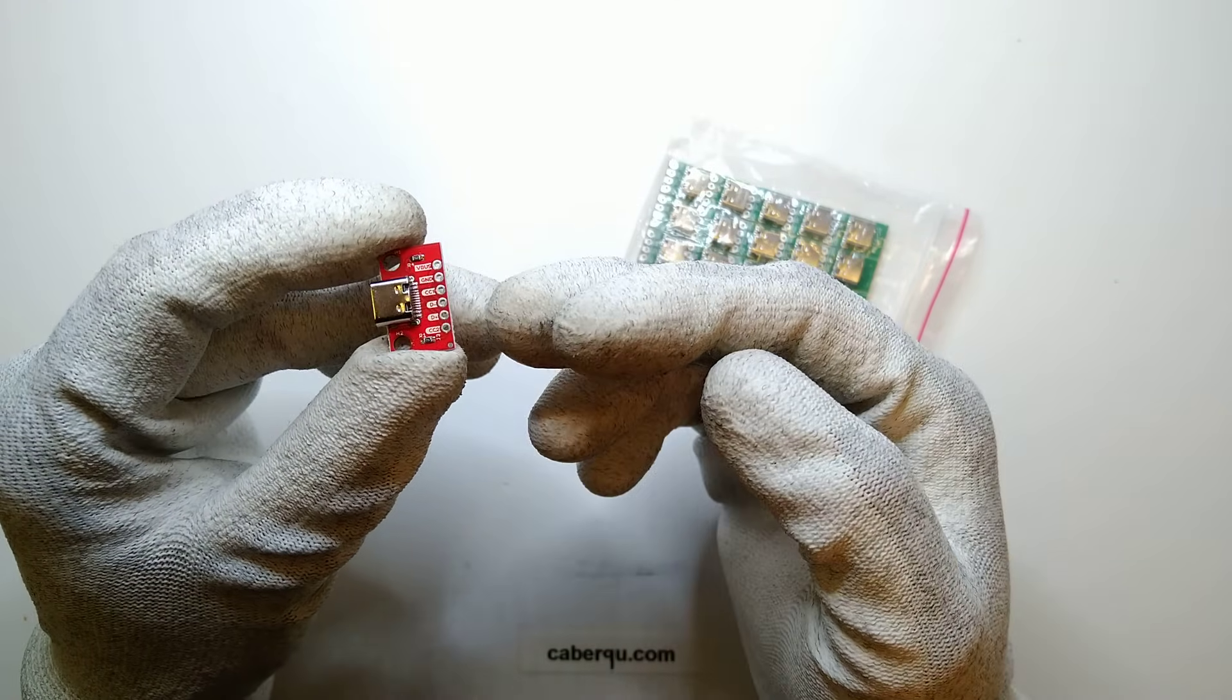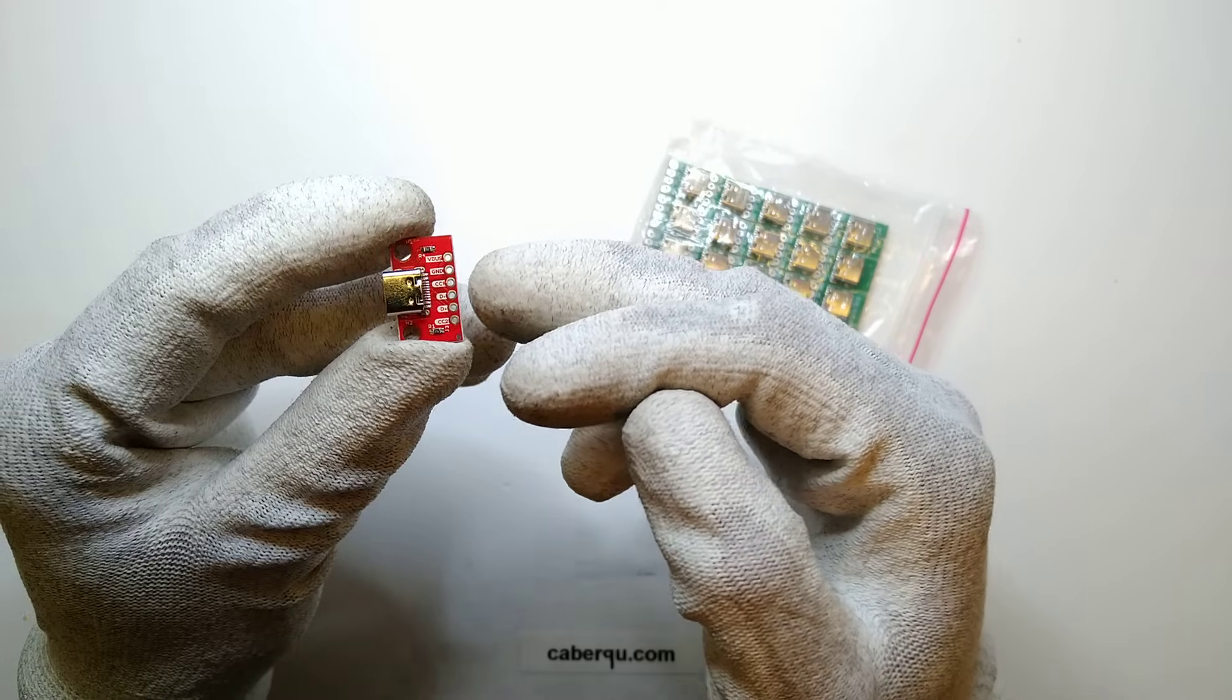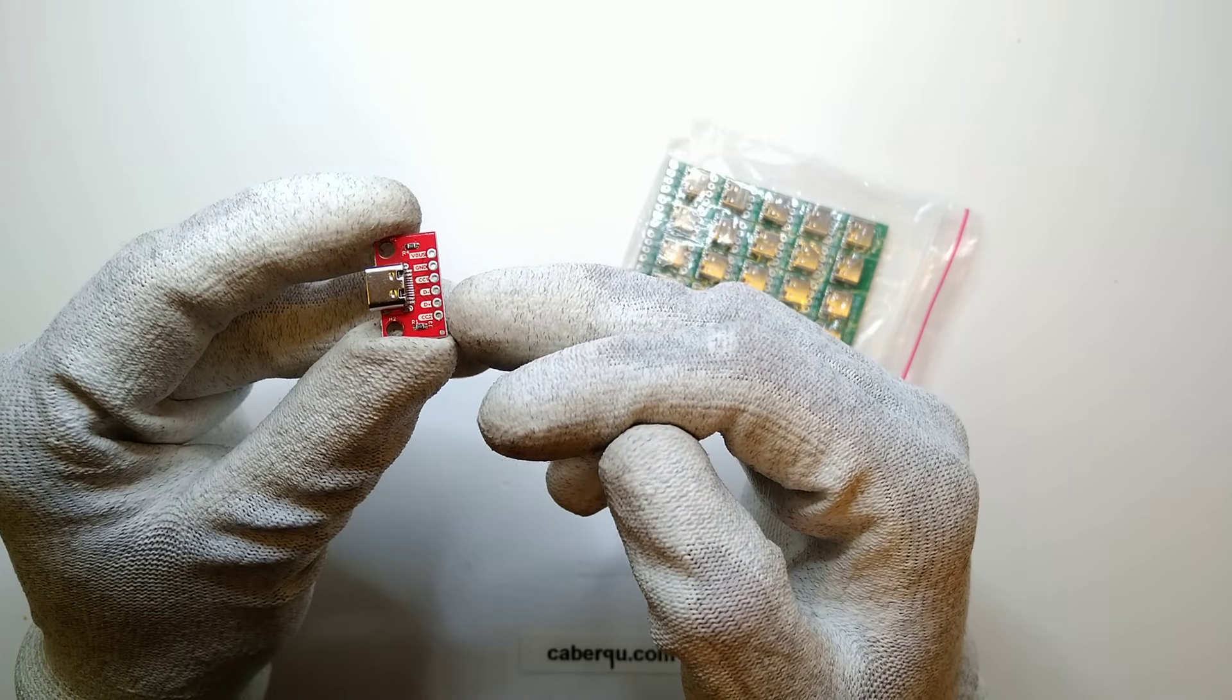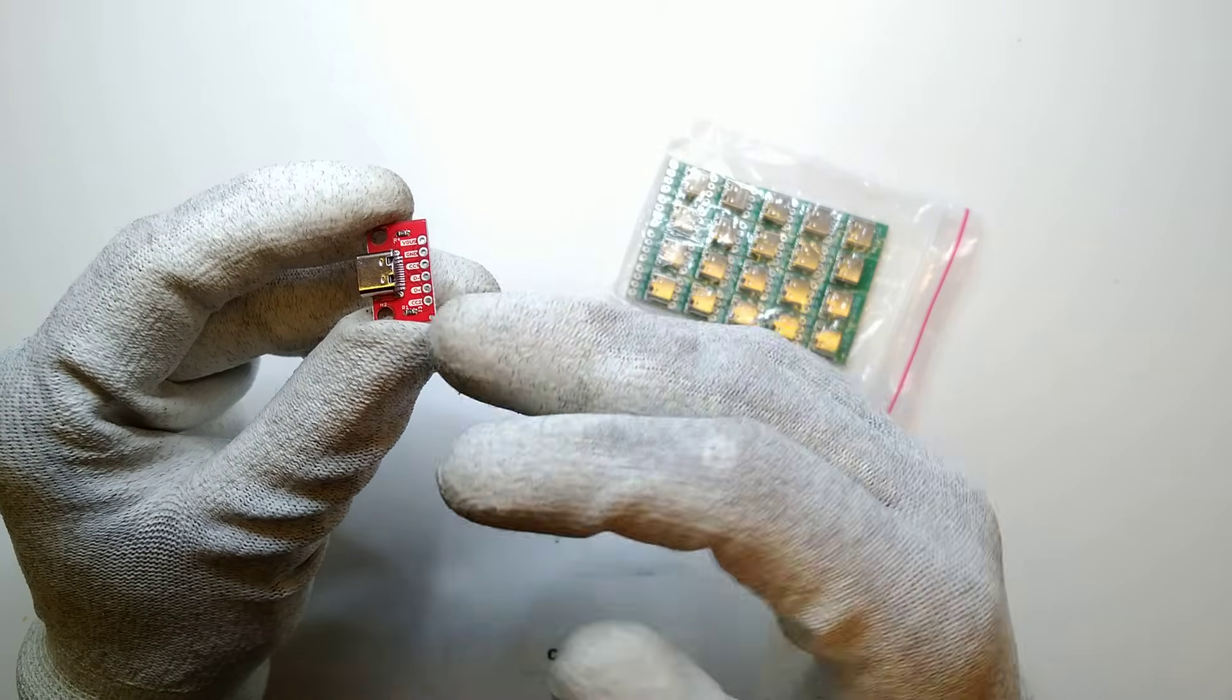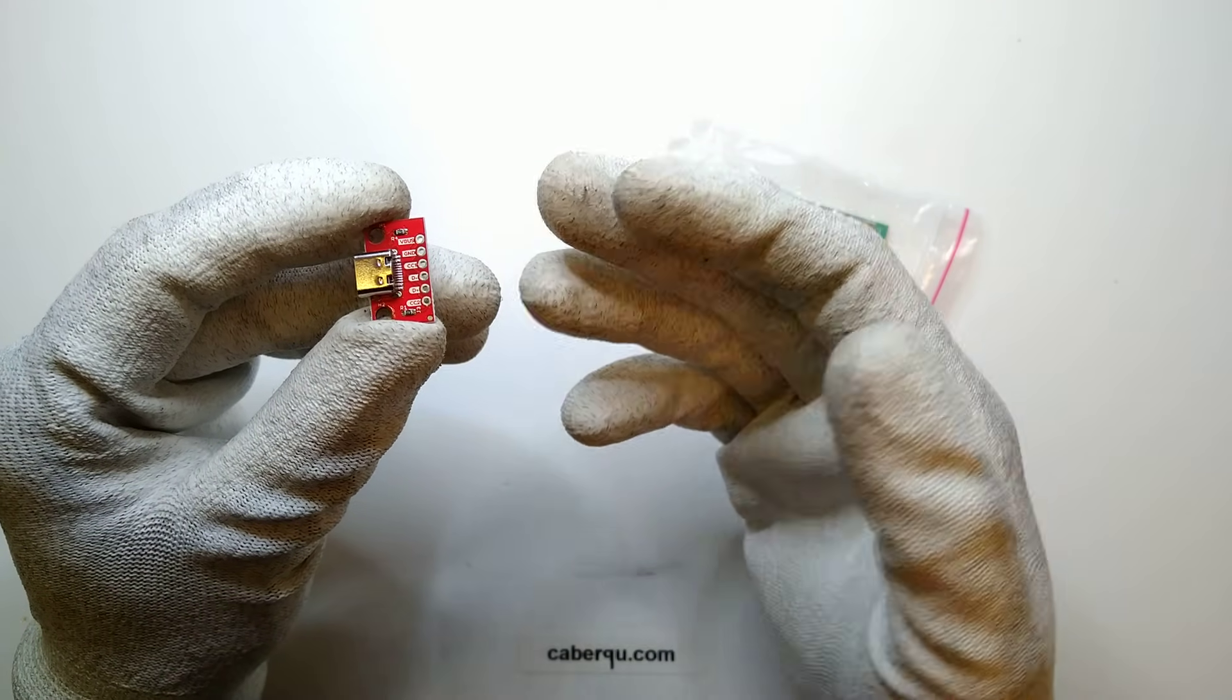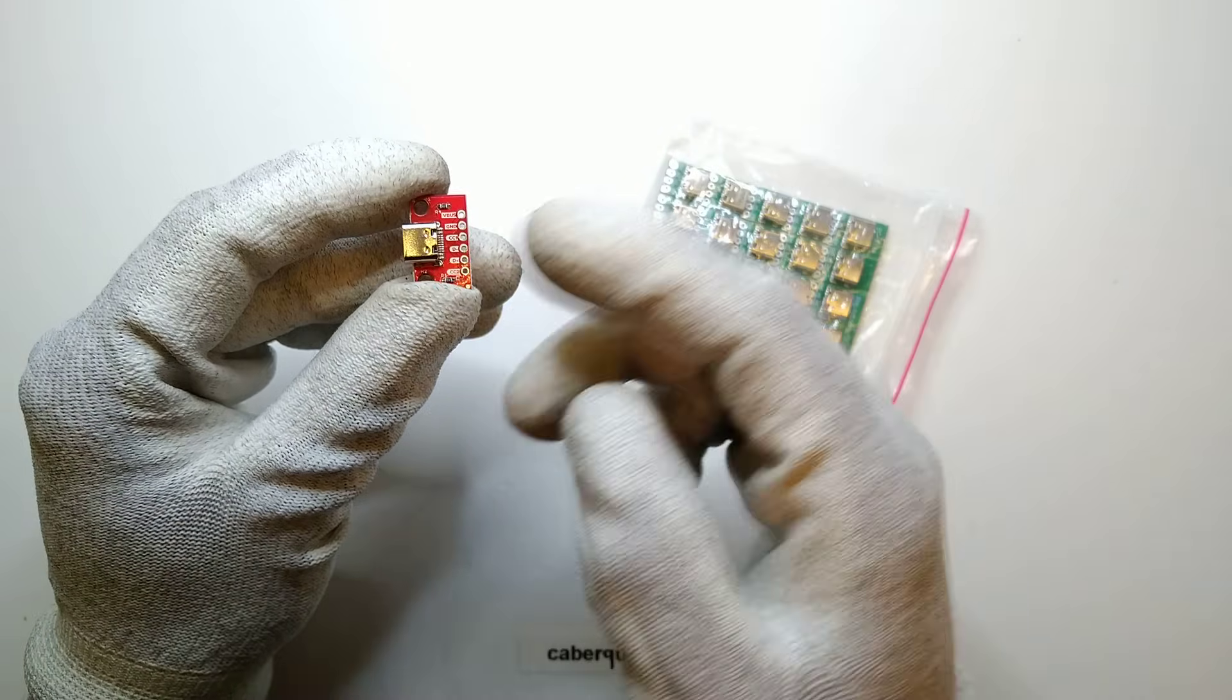The breakout board generally has those pins exposed, but the one here also has CC1 and CC2 exposed, and CC1 and CC2 are the configuration channels that I used to negotiate the power delivery or which kind of direction the power is going.